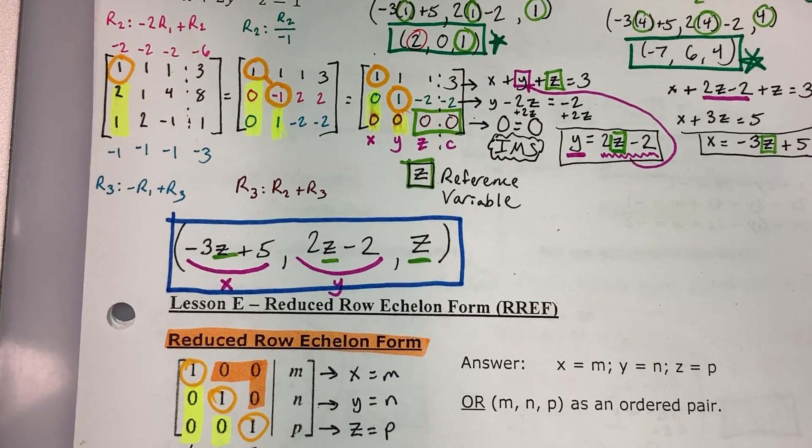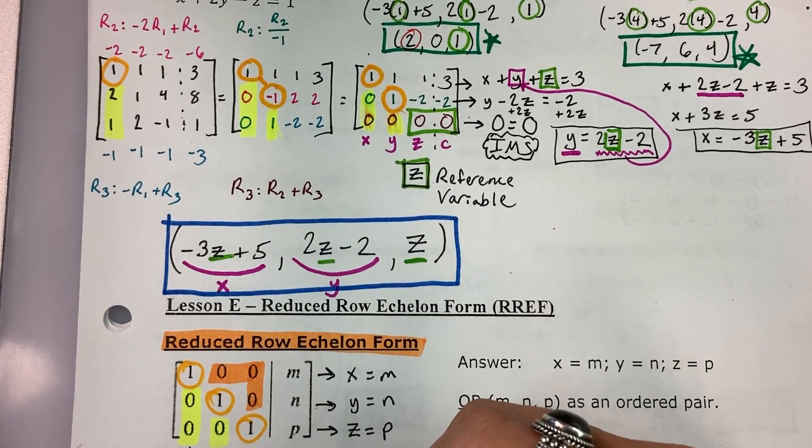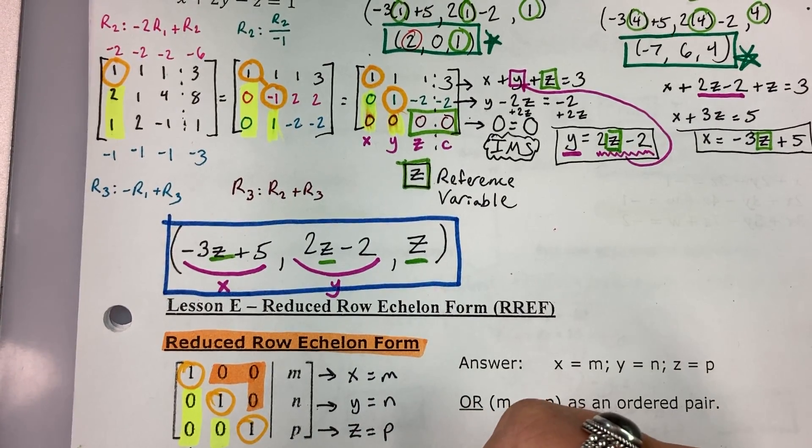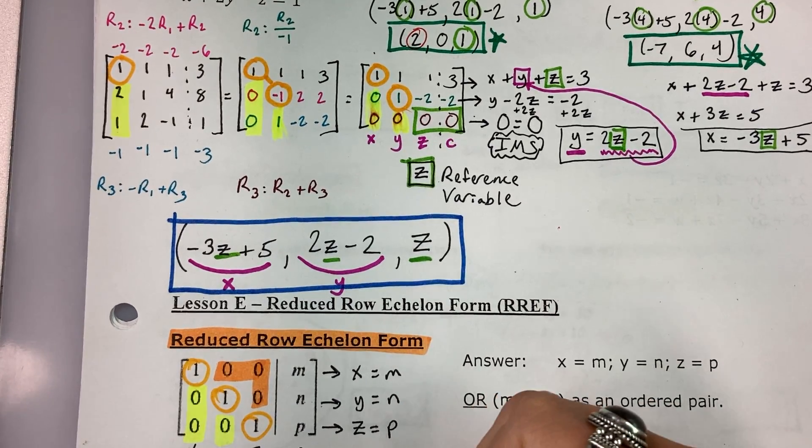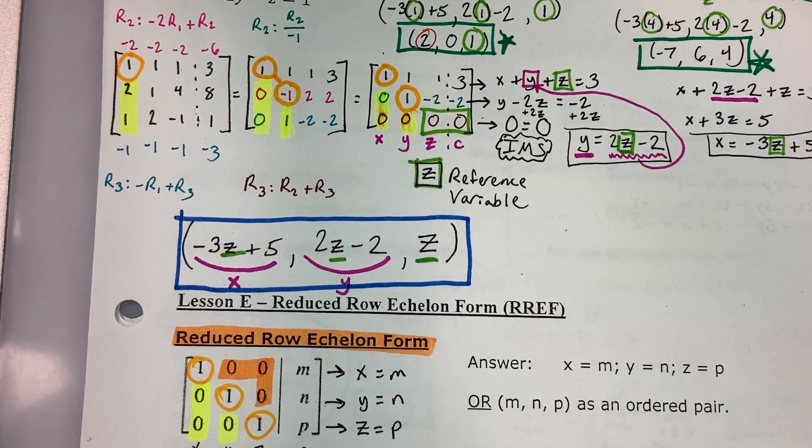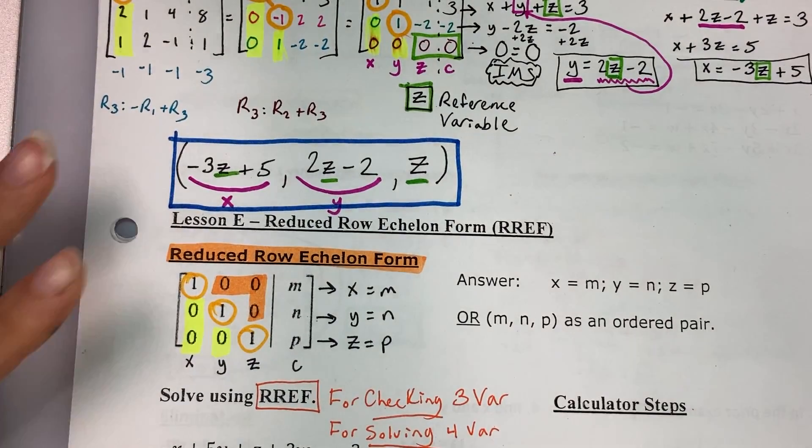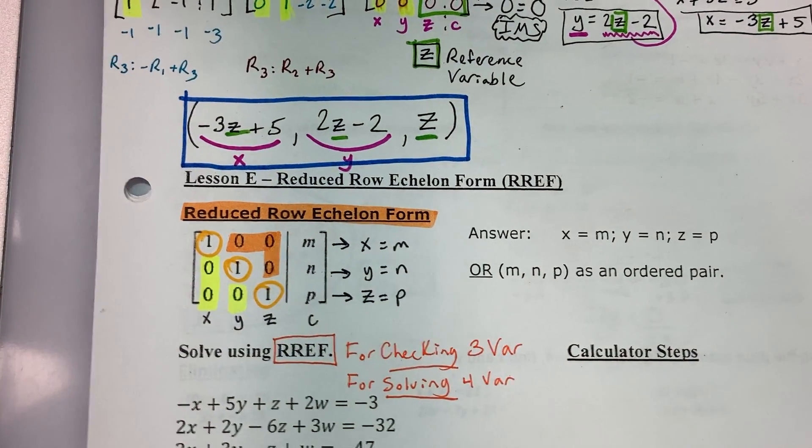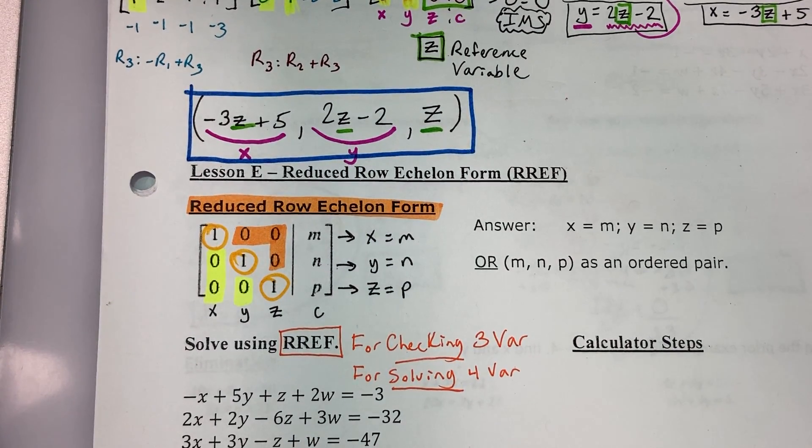We do use it for straight up solving four variable systems. So checking only for three variable systems, solving four variable systems. Because, yeah, solving a four variable system by hand gets pretty nasty.